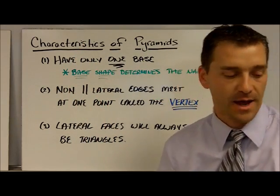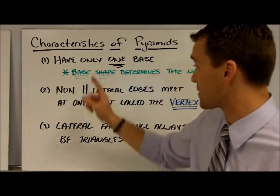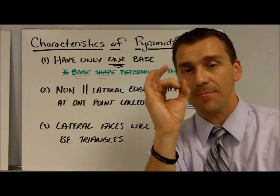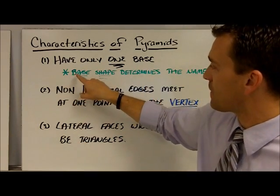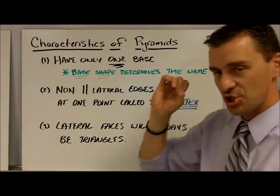Now you all know what pyramids look like. Yes, walk like an Egyptian. But there's the first characteristic: they all have one base. The same concept, though, applies here in green. The base shape determines the name, just like a prism.